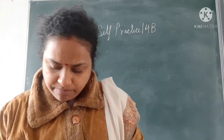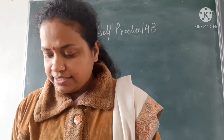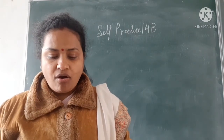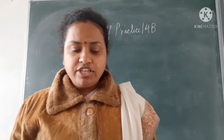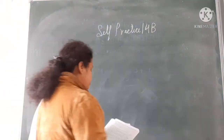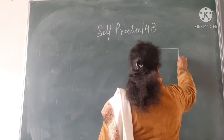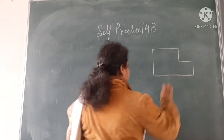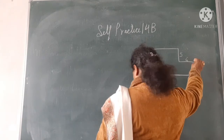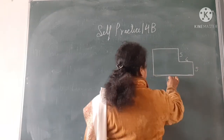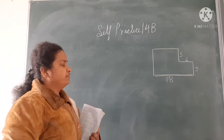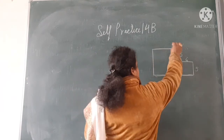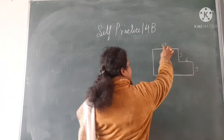Now let us start question number 12. Find the area of each of the following figures in which all corners are right angles. This is your first figure, given as 5, 6, 5, and 18. The missing length will be 12 because 12 plus 6 equals 18. I am dividing this figure into 2 rectangles.